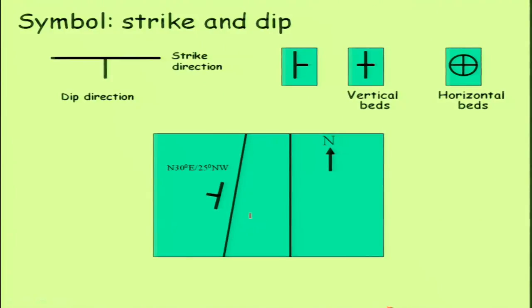Keeping this in mind, you can even read out maps in a way that shows how the information is given. For instance, this is a totally north-south orientation that is your strike, and you are having 20 degrees northeast — that is the dip direction — and 20 degrees is your amount of dip.